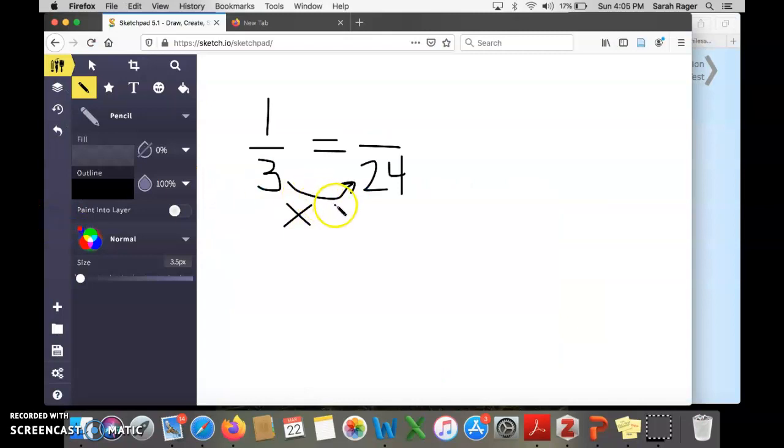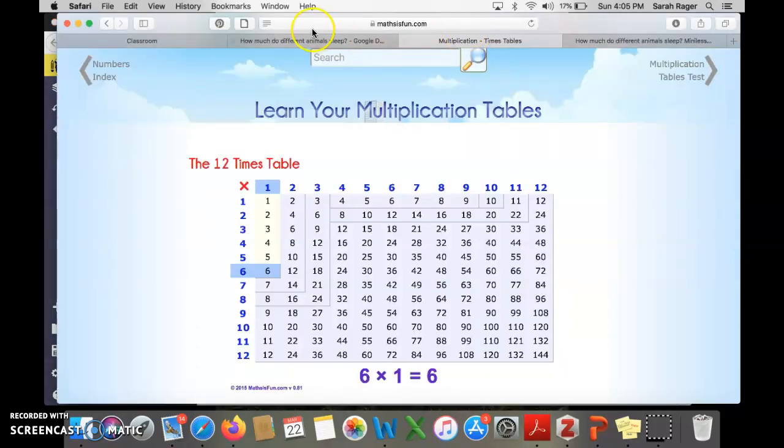All right. So I multiplied 3 times 8 to get to 24. If we're building an equivalent fraction, that means we need to multiply the numerator by the same number of units. 1 times 8. Huh, that's tricky. Just kidding. That's 8. So adults need to sleep 8 hours of every day.